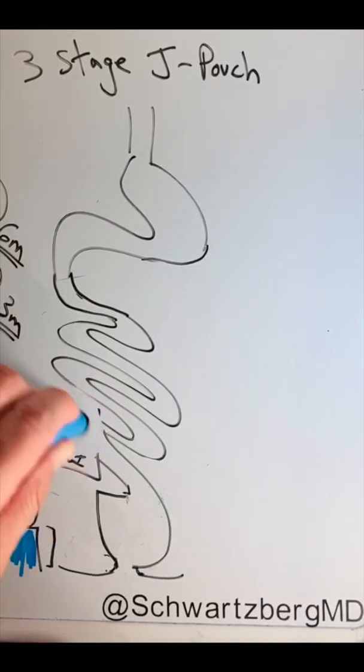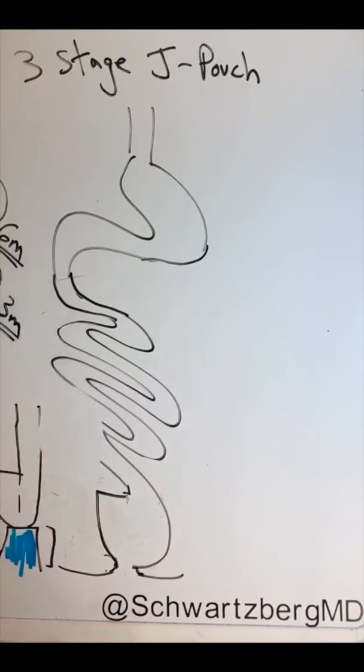Third stage is usually a very happy time because the patient has made it through all these different operations and all you have to do is reverse the ileostomy. And now they have their J pouch. Thank you.